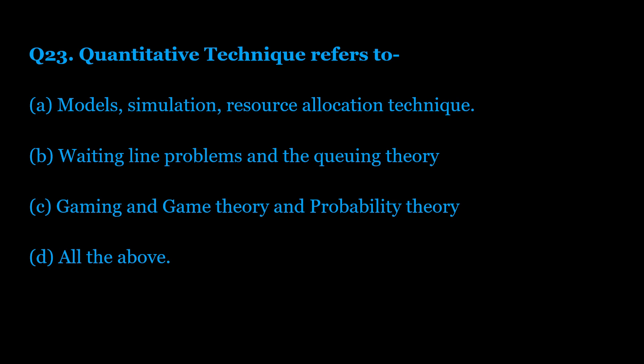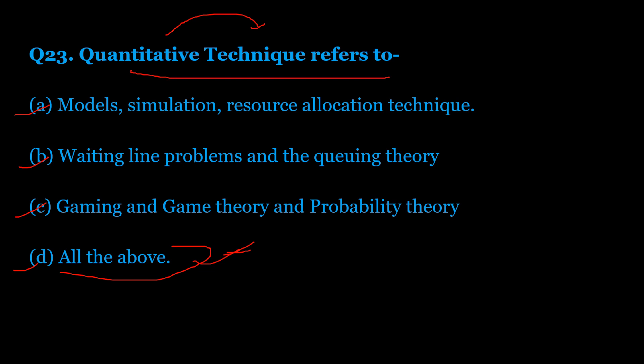Question number 23: Quantitative technique refers to — Option A: model simulation and resource allocation technique. Option B: waiting line problems and queuing theory. Option C: gaming, game theory, and probability theory. Option D: all of the above. The correct answer is Option D — all of the above. Quantitative technique refers to model simulation, resource allocation, waiting line problems, queuing theory, gaming, game theory, and probability theory.